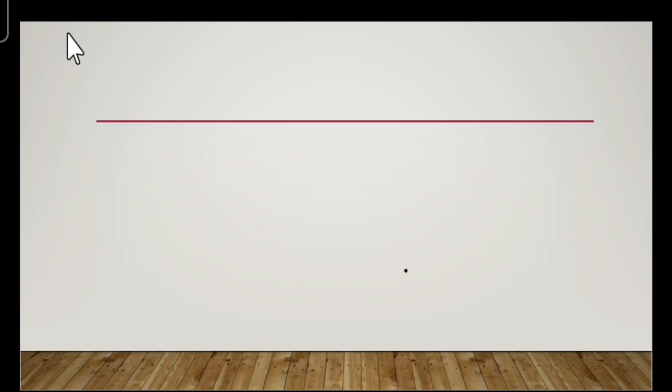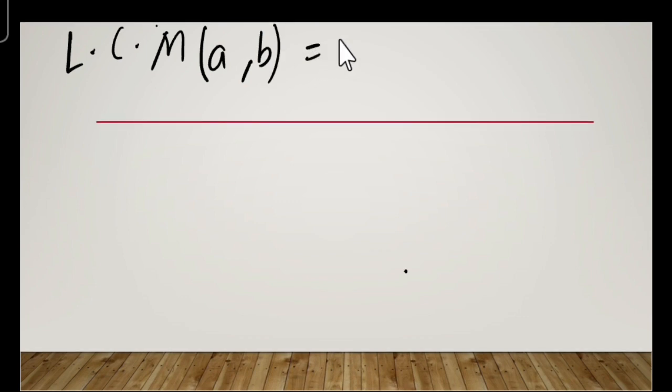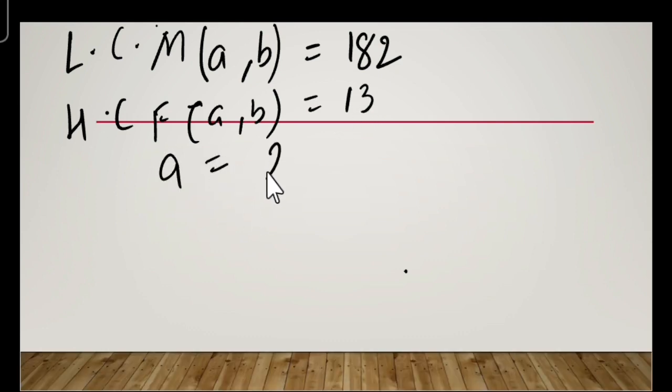So what are the given values? The LCM of two numbers is 182, the HCF of a and b is 13, and one of the numbers is 26. We have to find the other number.